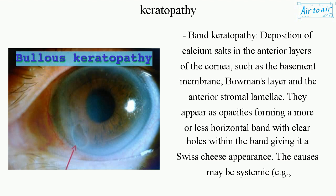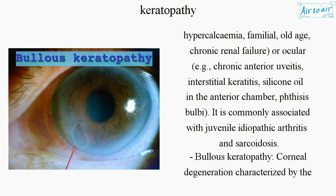The causes may be systemic, e.g., hypercalcemia, familial, old age, chronic renal failure; or ocular, e.g., chronic anterior uveitis, interstitial keratitis, silicone oil in the anterior chamber, phthisis bulbi. It is commonly associated with juvenile idiopathic arthritis and sarcoidosis.